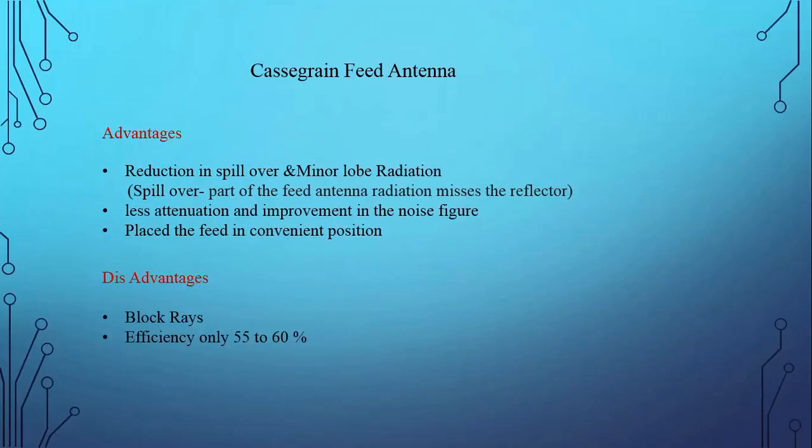Now we go to the advantages of this antenna. The first advantage is that it reduces spillover and minor lobe radiation. Spillover means it is the part of the feed antenna radiation that misses the reflector. This antenna has less radiation loss and improvement in the noise figure.